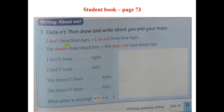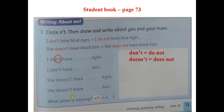Writing about me: circle and then draw and write about you and your mom. Phần này các con khoanh tròn âm NT, sau đó vẽ và viết về con và mẹ. Các con sẽ gặp lại: DON'T = DO NOT; DOESN'T = DOES NOT. Ví dụ: 'I don't have blue eyes' = 'I do not have blue eyes.' 'She doesn't have black hair' = 'She does not have black hair.' Lấy bút ra, khoanh tròn âm NT, vẽ về con và mẹ, rồi hoàn thành bài tập.